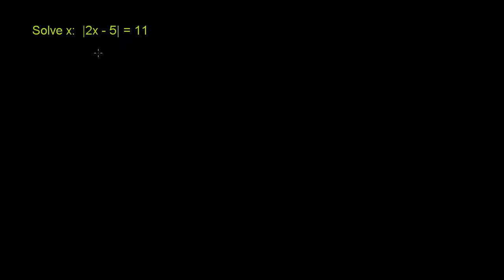Now, the big insight you need to have whenever you have an absolute value equation like this is just to remember: if I have the absolute value of a is equal to 11, what do we know about a? That means that a is equal to 11. Or what else could a be?